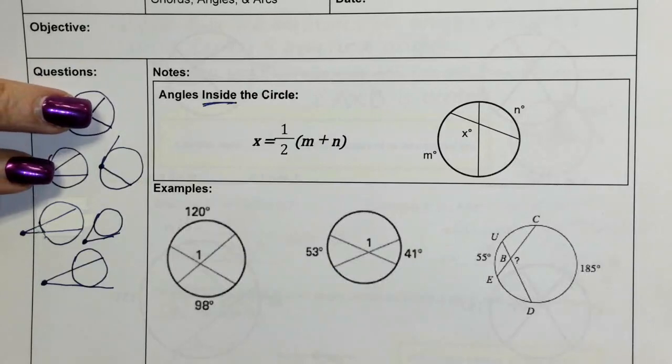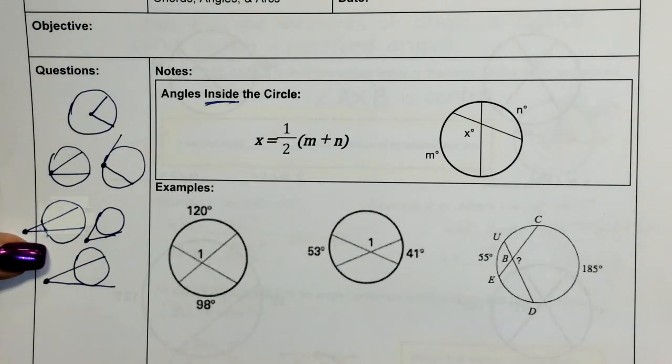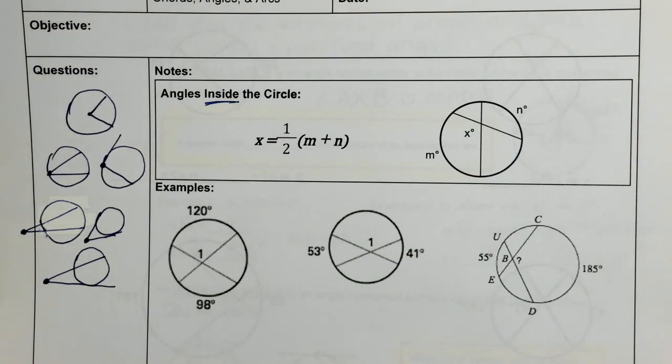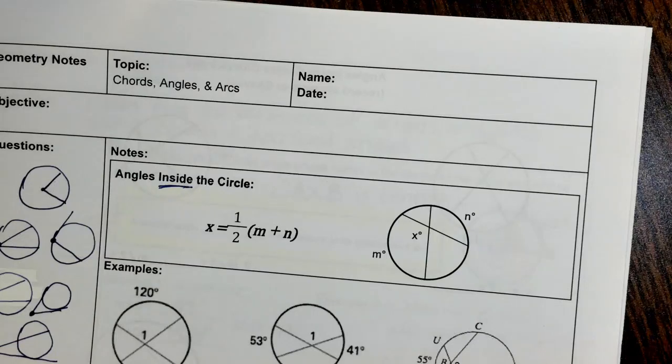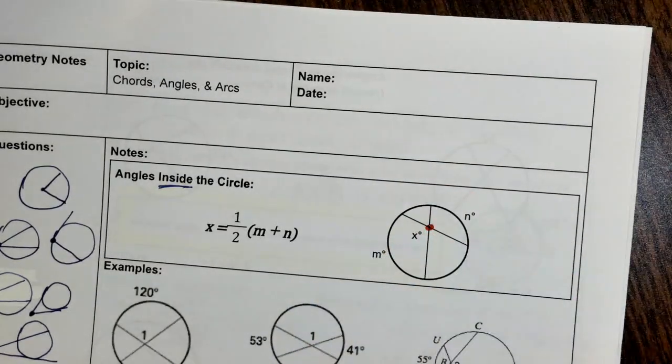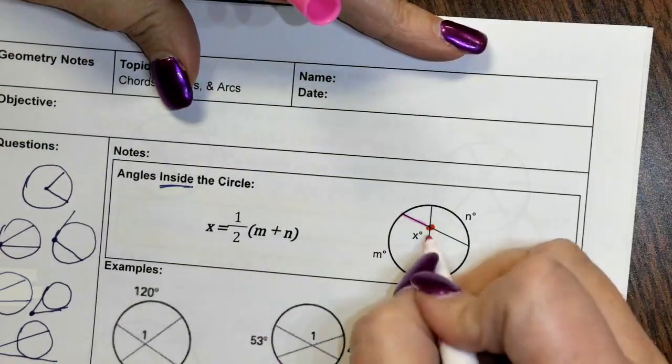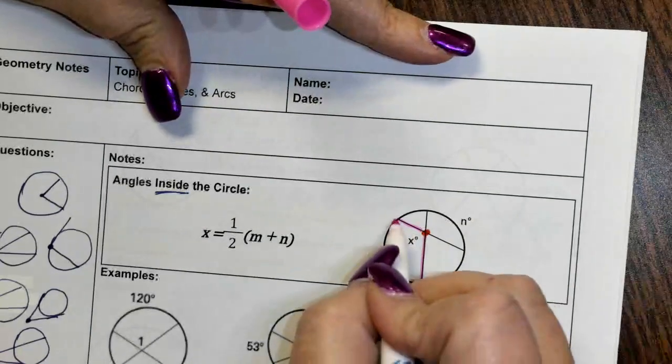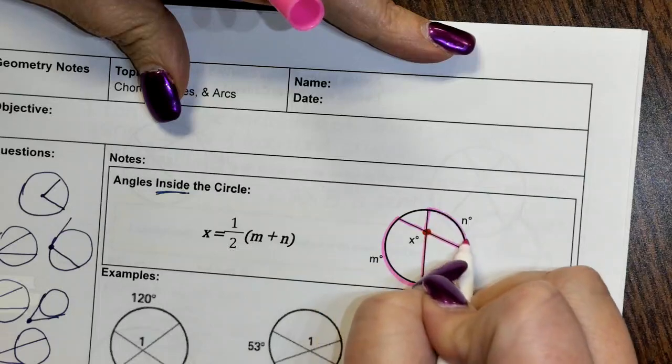Notice when the vertex is in the center or it's on, we only intercept one arc. When the vertex is outside, we intercept two arcs and that's why we had to do something with both of the arcs, so we subtracted them. In this case, notice that the vertex of the angle is inside the circle, somewhere not in the center. So it's right here. There is the vertex of our angle. And so we have our angle, we have this side that goes out and it captures M, and we have this side of the angle that goes out and captures N.